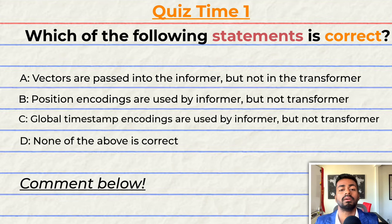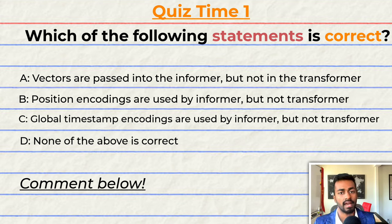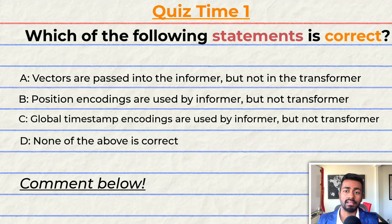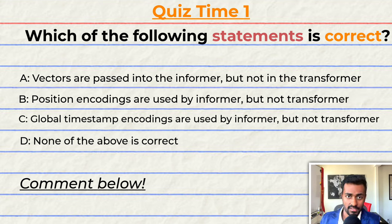Quiz time — have you been paying attention? Let's quiz you to find out. Which of the following statements is correct? A: vectors are passed into the informer, but in the transformer, they are not.